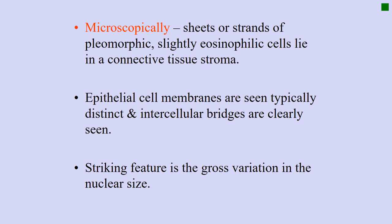Microscopically, this tumor is quite characteristic because it presents as sheets or strands of pleomorphic cells. Pleomorphic means the cells show different sizes and shapes - pleo means many, morphic means morphologies. The slightly eosinophilic cells lie in a connective tissue stroma. The epithelial cell membranes are typically distinct and intercellular bridges are clearly seen. The striking feature is the gross variation in nuclear size.